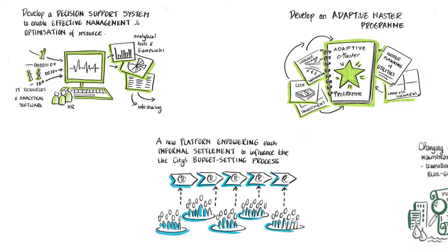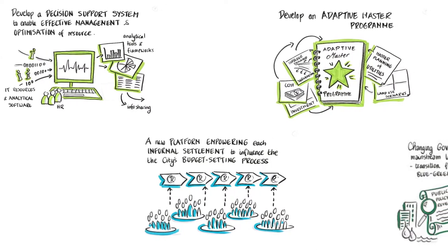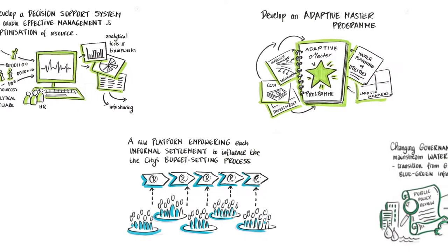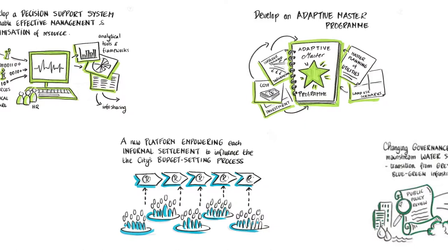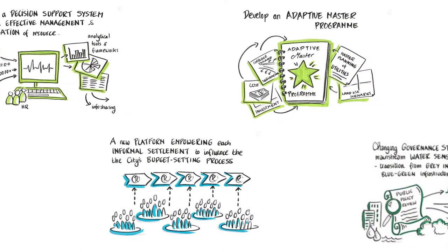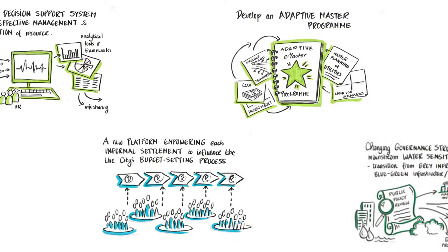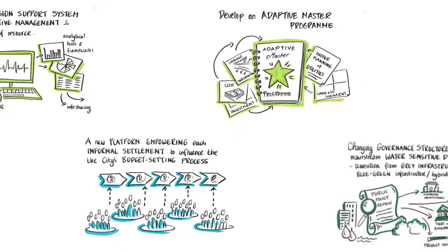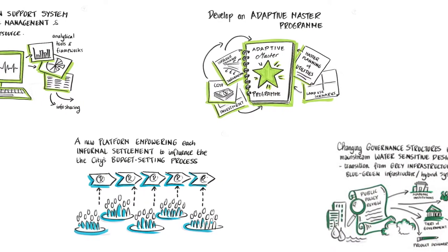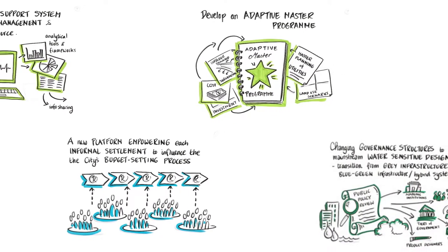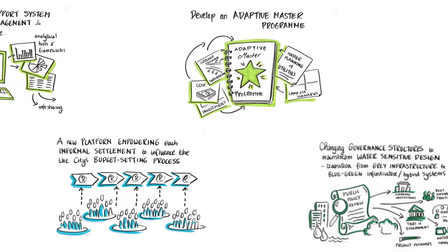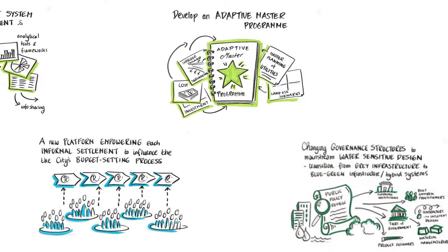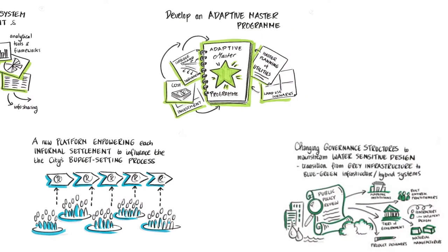On the screen are some of the actions from the other partner city, the city of Cape Town. Some of the things they have developed are around developing data and information platforms and having transparent data and information with their communities, particularly those in informal settlements. In addition, developing an adaptive master's program to give their leadership and help build capacity in resilience thinking, as well as improving governance structures and policies to encourage green infrastructure.